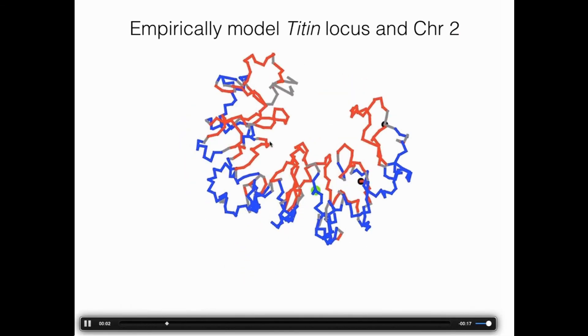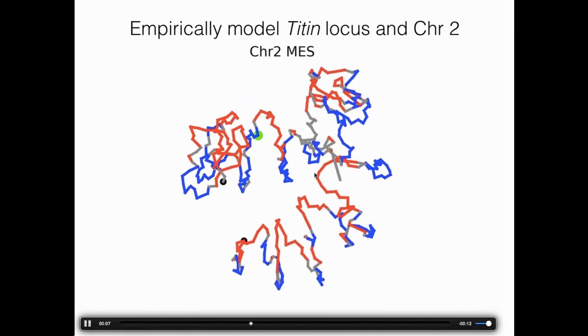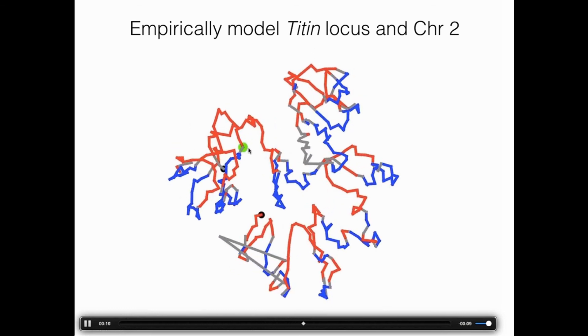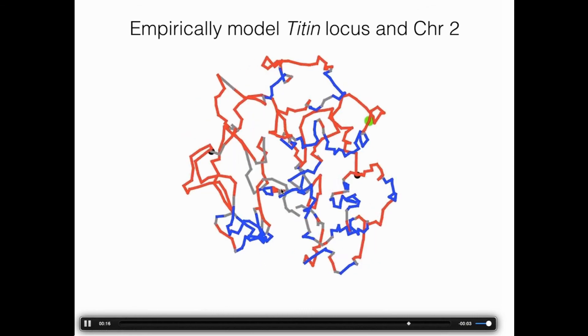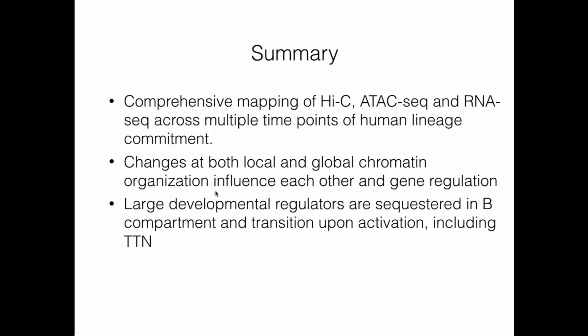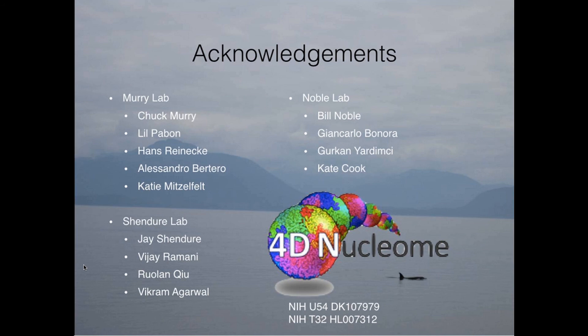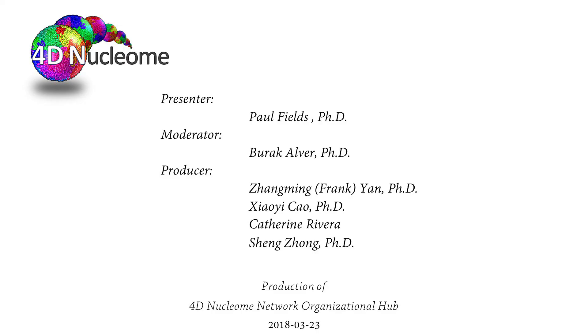In summary, we present a comprehensive look at how Hi-C, ATAC-seq, and RNA-seq vary together and independently across multiple time points of lineage commitment. Changes at both local and global chromatin organization correlate with and occur coincident with gene regulation. In particular, large developmental regulators are sequestered in B compartments and transition to A upon activation, including the key cardiac protein Titin. This work is part of the University of Washington's Center for Nuclear Organization, supported by our 4DN grant and a T32 fellowship, with contributions from the Murray, Shendure, and Noble Labs.